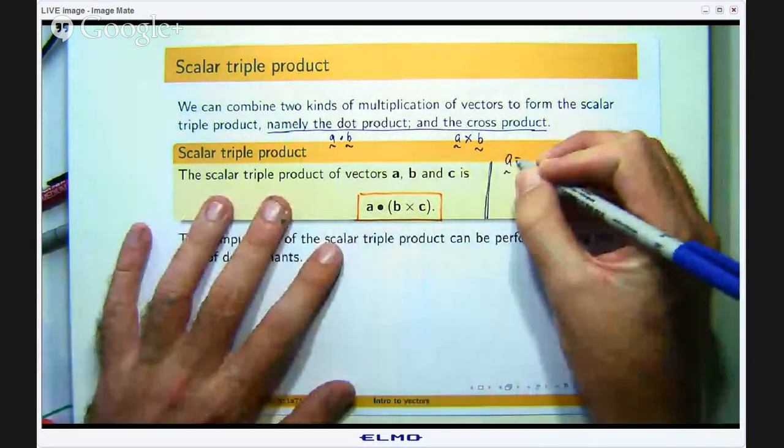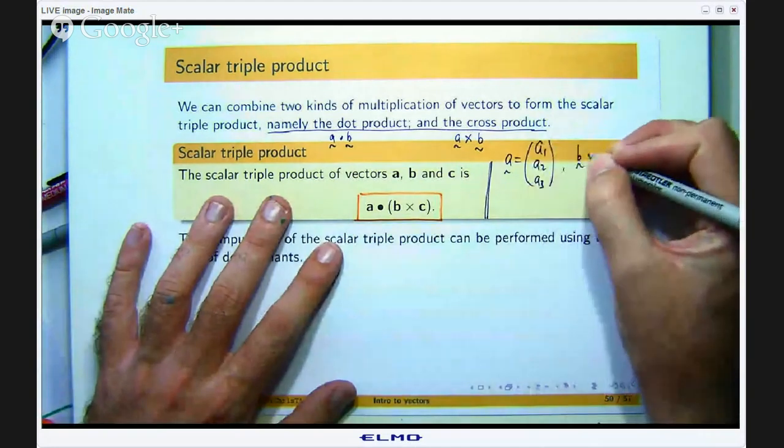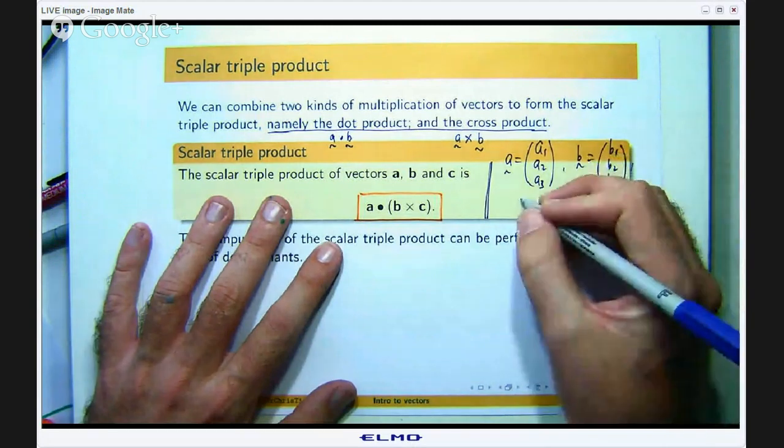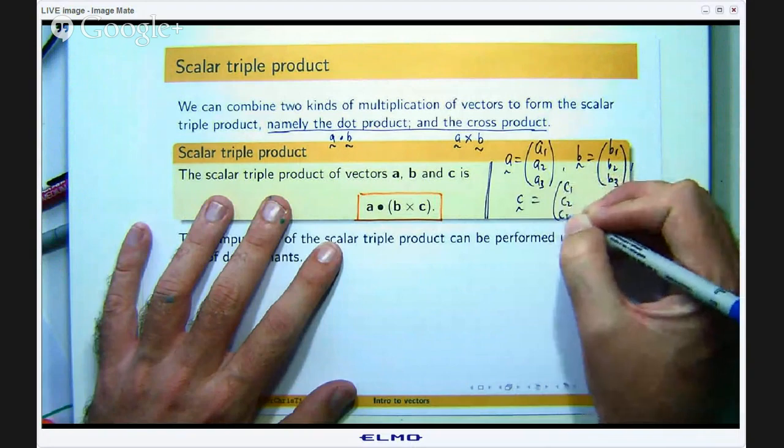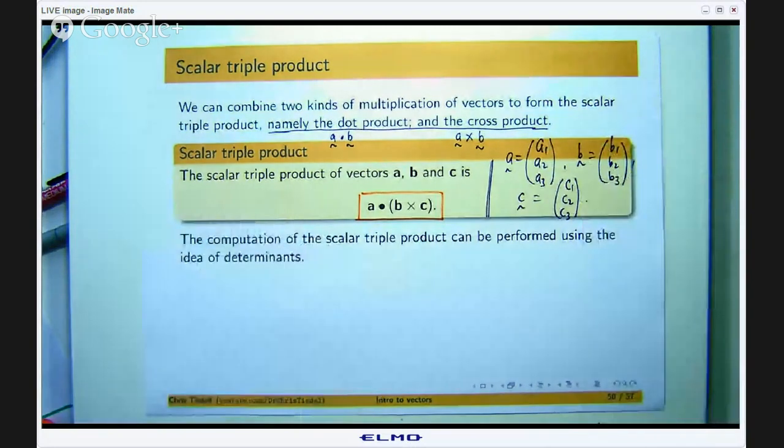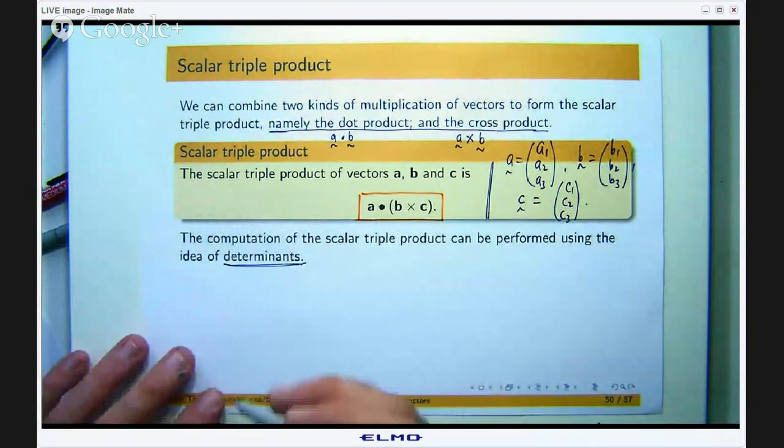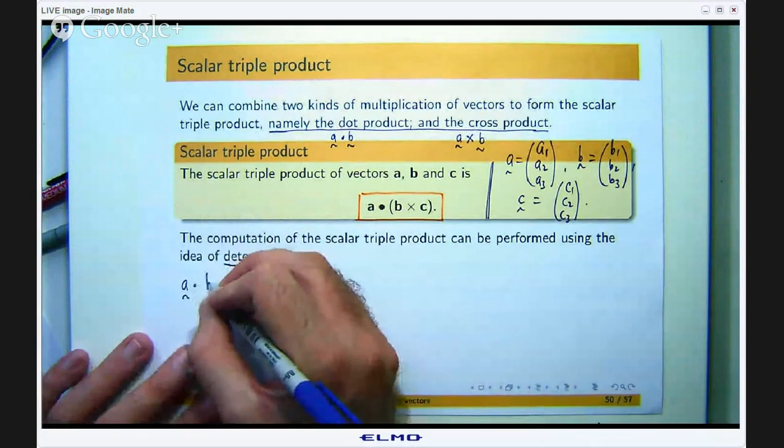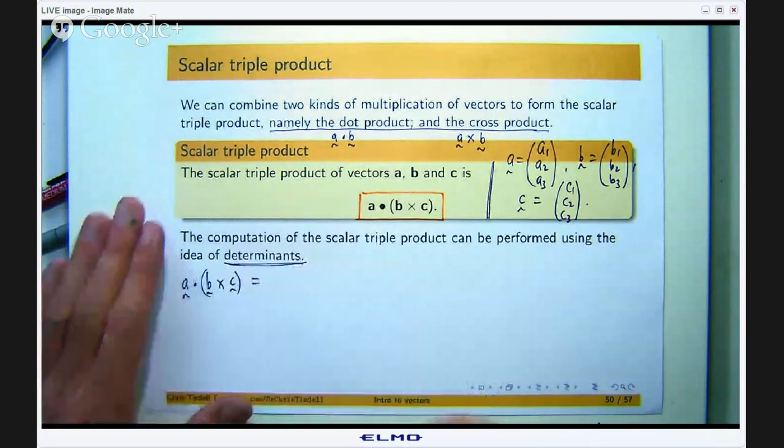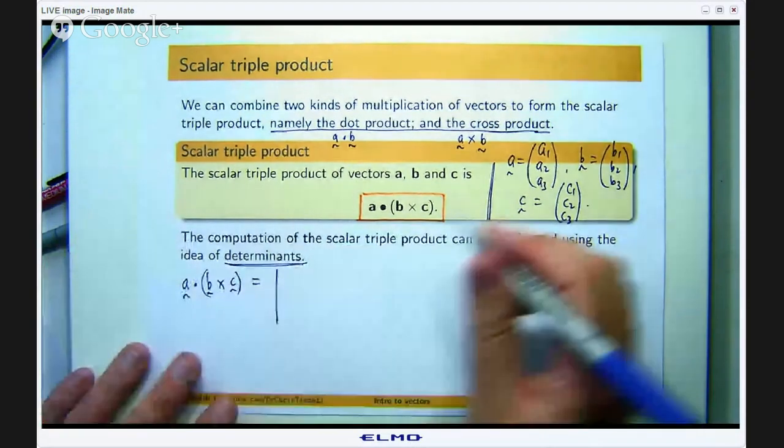Okay, so let me just show you how you can compute this using determinants. So we are working in three dimensional space here. So let's say we have a vector a written as a column like that, b as this column vector, and c as this column vector where all the components are real numbers. How do we use the idea of determinants to compute this? Okay, well let me show you.